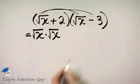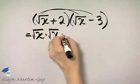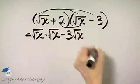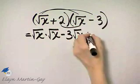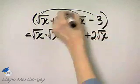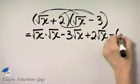Then the outer or outside product, that's minus 3 square root of x. Inside or inner product, that's plus 2 square root of x. And then last times last is minus 6.